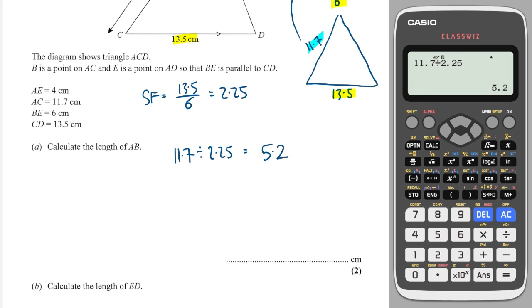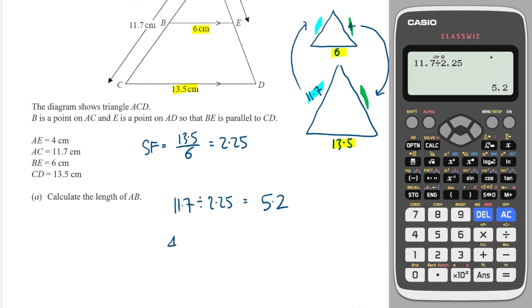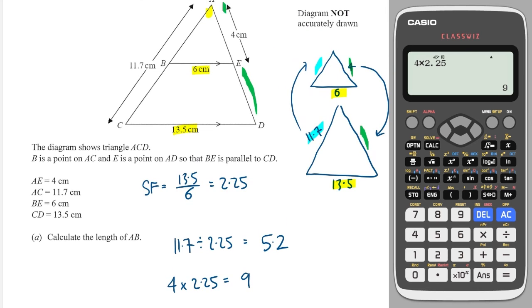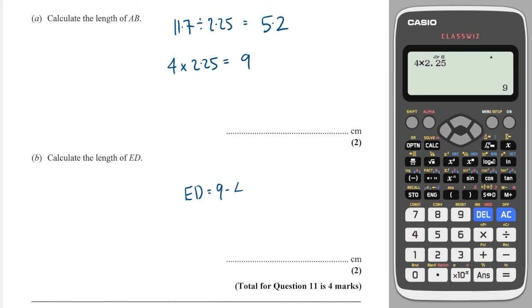Next, the length of ED. ED is part of the right-hand side of the larger triangle, but it's not the whole right-hand side. So what I will do is work out the right-hand side of the larger triangle first. I need to go from the smaller to the larger, so I'll need to multiply. So I'll need to do 4 multiplied by 2.25, and that equals 9. Then I need to be a bit savvy because I'm looking for this part here, and the whole thing is 9. So ED equals 9 minus 4, which is 5.